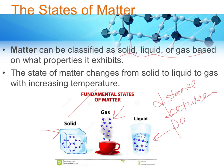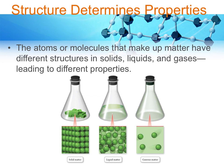In a solid, the particles are very close together. In a liquid, they are moderately close. In a gas, the particles are pretty far apart. That affects all sorts of properties. Here's another visualization: you can see that the particles of a solid are very tightly packed, those of a liquid are still pretty close but have room to slide past one another, and the particles of a gas are freely moving.